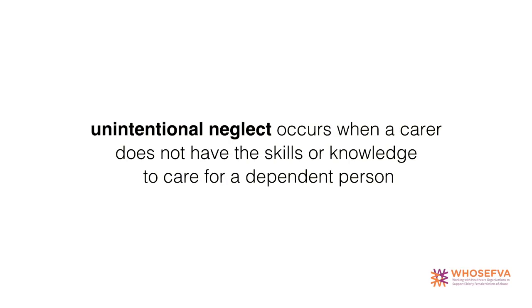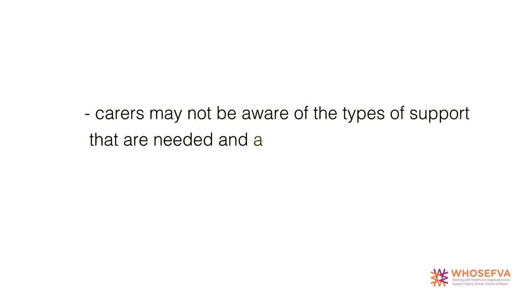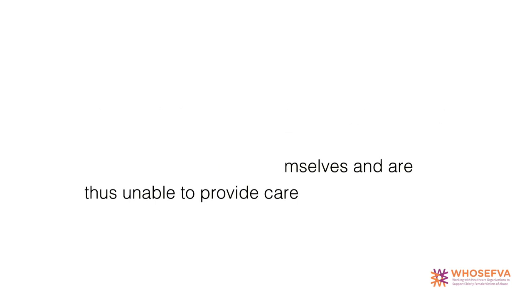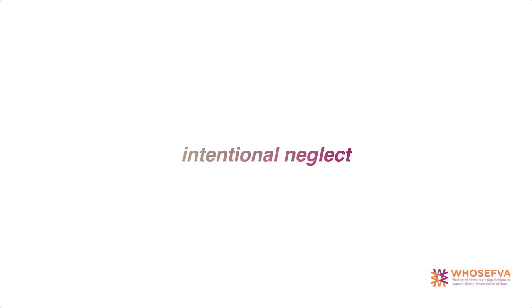Unintentional neglect occurs when a carer does not have the skills or knowledge to care for a dependent person who is unable to meet those needs on their own. Carers may not be aware of the types of support that are needed and available, and they might also be ill themselves and are thus unable to provide care.